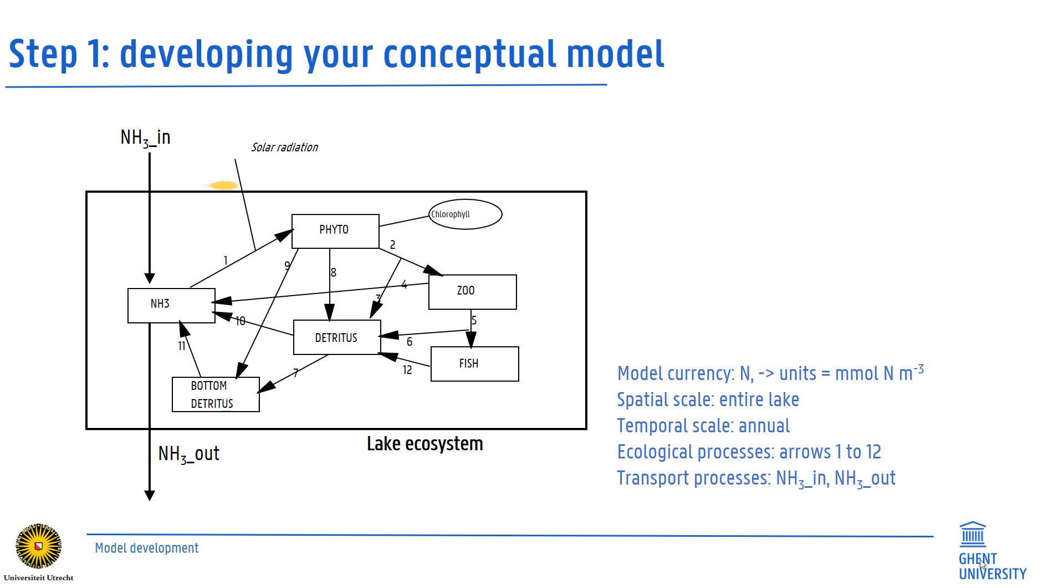Solar radiation mediates ammonia uptake by phytoplankton and the total level of chlorophyll is derived to link ecosystem state to aerial photograph observations from which chlorophyll can be measured. Finally, all the ecological fluxes between the state variables and transport processes of import and export of ammonia are represented by the arrows. The model currency is defined as millimoles nitrogen per cubic meter. The processes are modeled at an annual temporal scale.